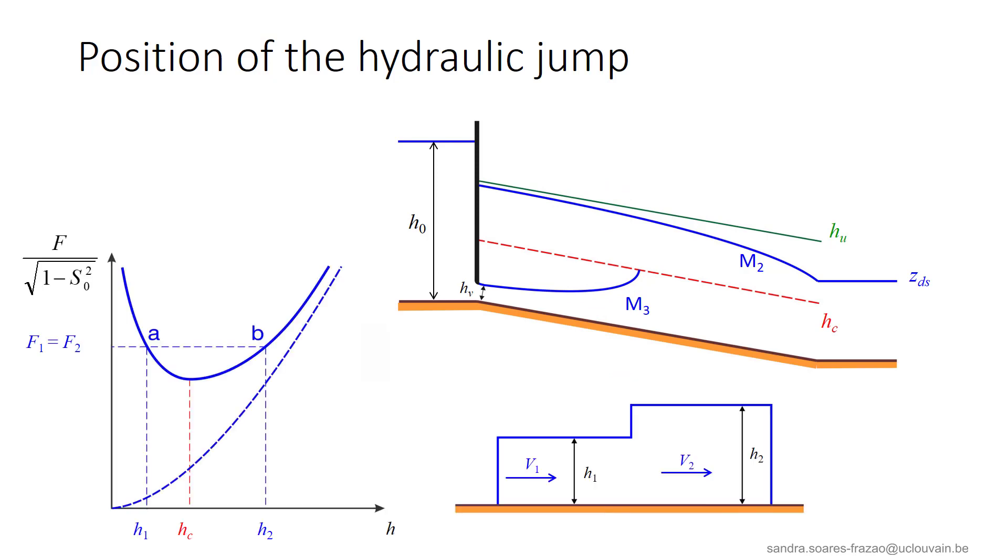The hydraulic jump is described by the equality of the specific forces F1 and F2 on both sides of the jump. So, if we consider that the M3 profile here represents all possible h1 depths and that the M2 profile represents all possible h2 depths,